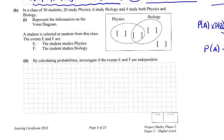In a class of 30 students, so U equals 30, 20 study physics, 6 study biology, and 4 study both physics and biology.